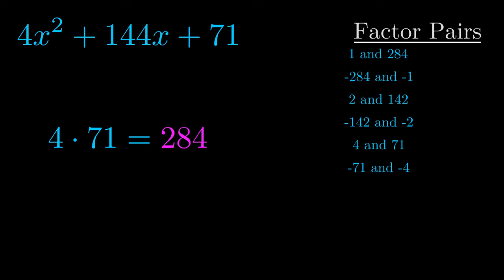The b value is the coefficient on the x term. That's the middle term, the one that we haven't done anything with yet. And really this is the only factor pair that we need.